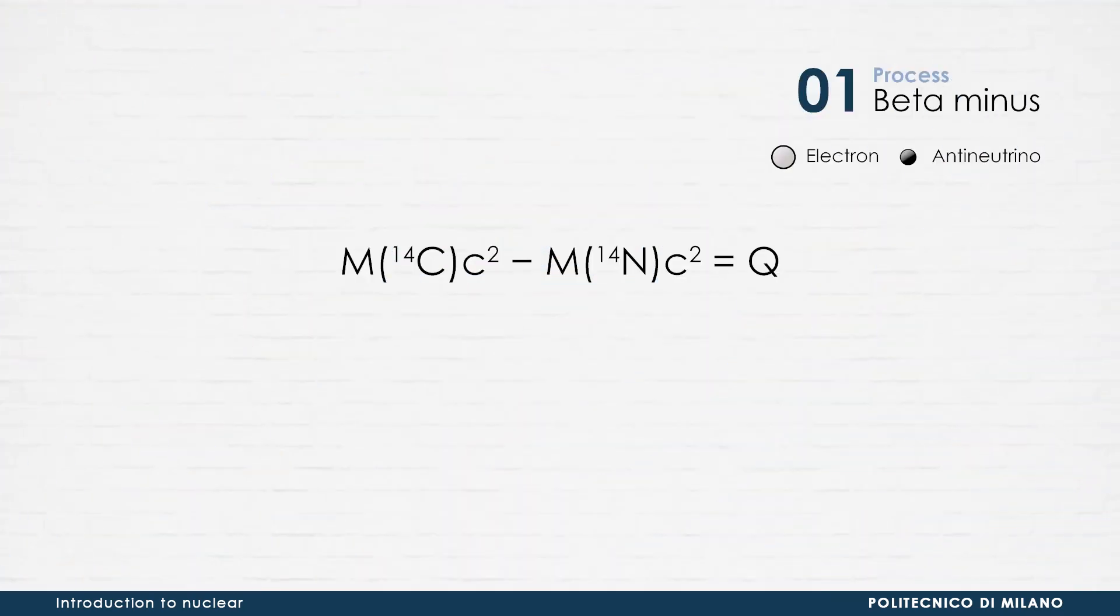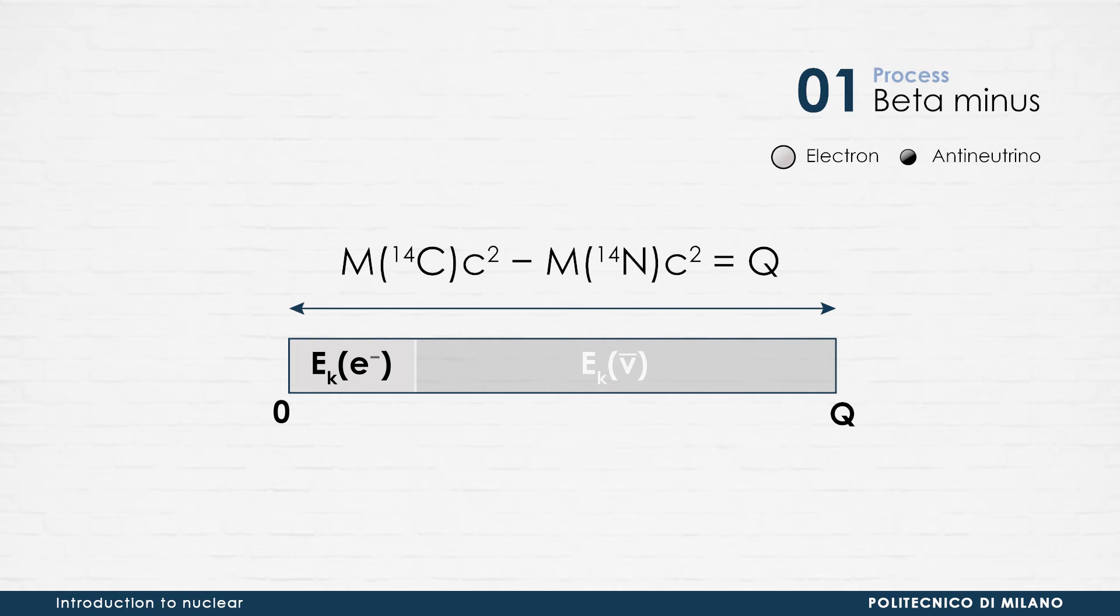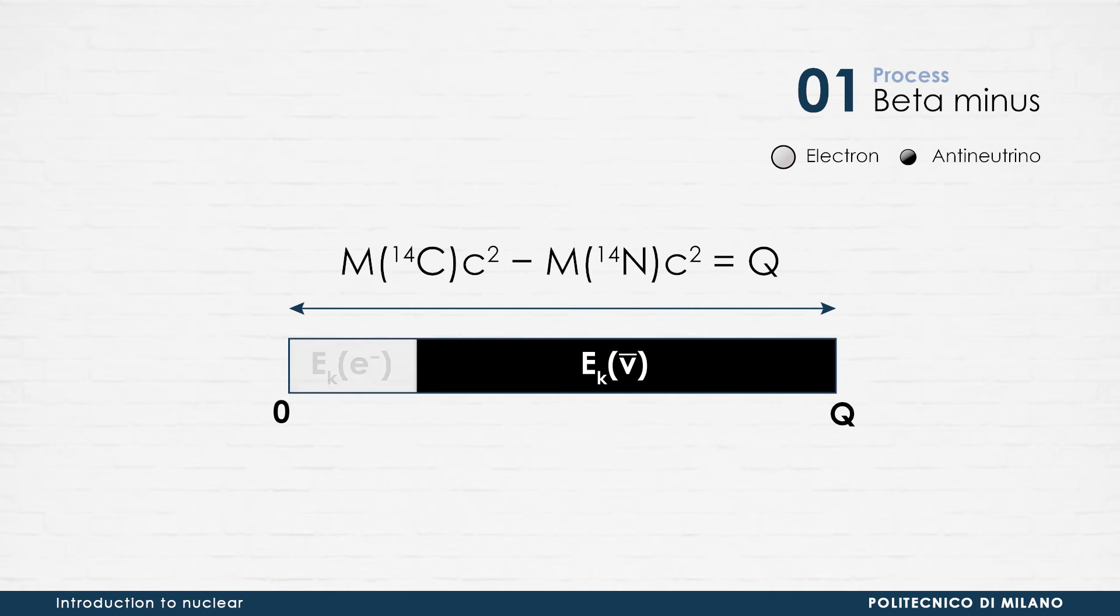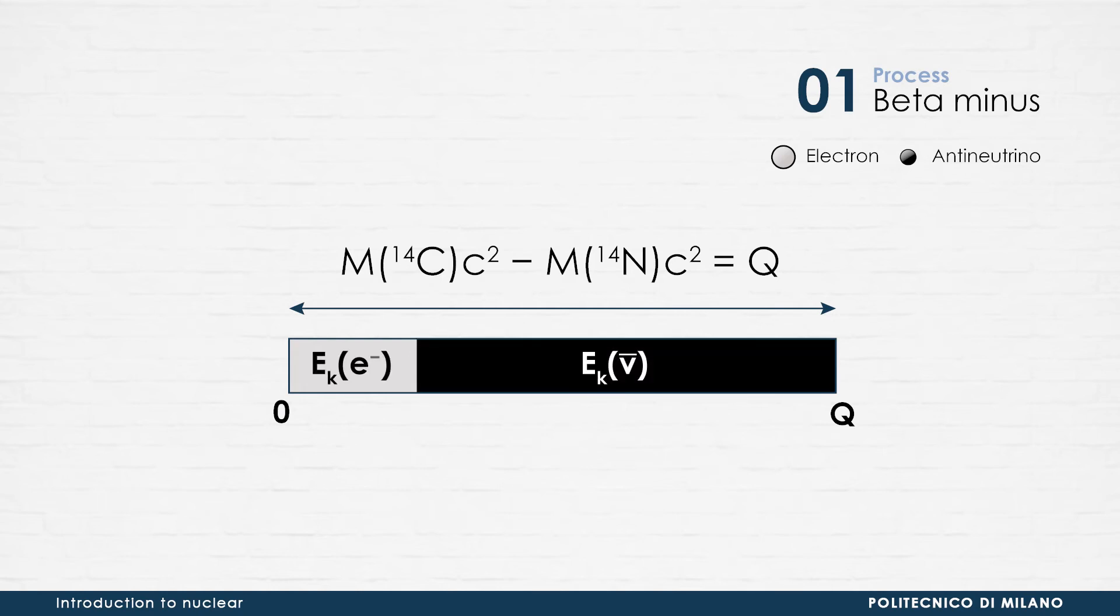The Q-value of the process results to be the difference between the atomic masses of the parent and the daughter nuclei. This energy is essentially shared by the two light particles, the electron and the antineutrino. The different possible combinations of this sharing lead to an important experimental evidence. The kinetic energy of electrons emitted in beta minus decay is continuously distributed from zero up to the Q-value.